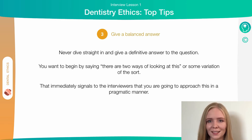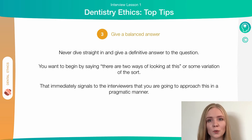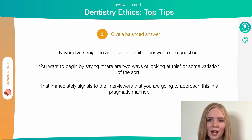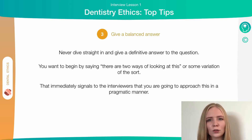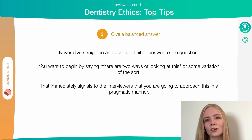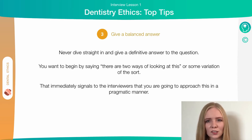Our next tip is to give a balanced answer. Maybe start your answer with something like, there are two ways to look at this, or on the one hand we need to consider this, but on the other hand we need to consider this. This shows to your interviewer that you've considered all sides of the argument rather than just going straight in there with one side. They want to see you've considered all the influencing factors. So if you get asked a question on ethics, focus on showing a broad understanding of the scenario as opposed to pushing your answer forwards.